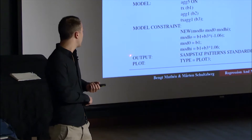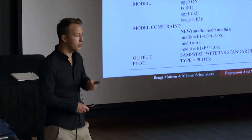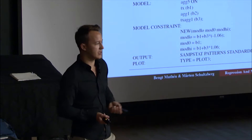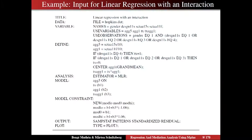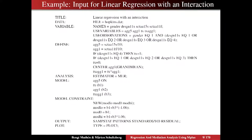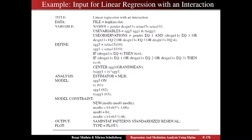In the output command, we ask for additional outputs. There's a rich default output for each analysis in Mplus, but you can always ask for more. In this case we ask for SAMPSTAT (sample statistics), PATTERNS (missing data patterns), STANDARDIZED (standardized results), RSQUARE for the model, RESIDUALS for information about residuals, and PLOT TYPE equals PLOT3, which gives us all the available plots for this analysis.